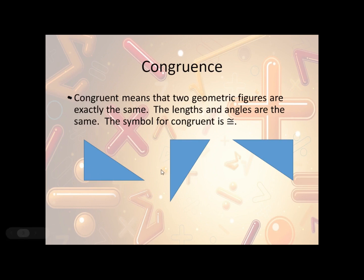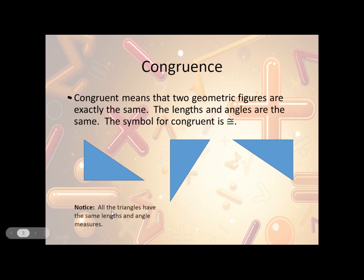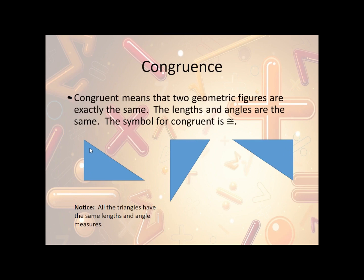So we can see that we have three triangles here, and they're all exactly the same. Now they're rotated a little bit, they're flipped around. They might look a little different, but the sizes are all the same. So they all have the same lengths — this side and this side and this side. All the angle measures are the same: this angle and this angle and this angle are all the same, and so on.